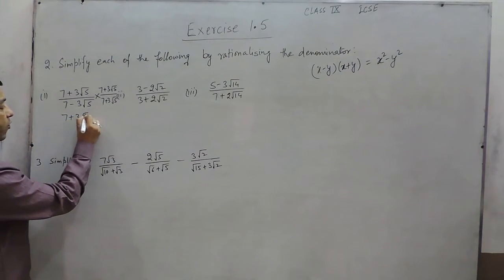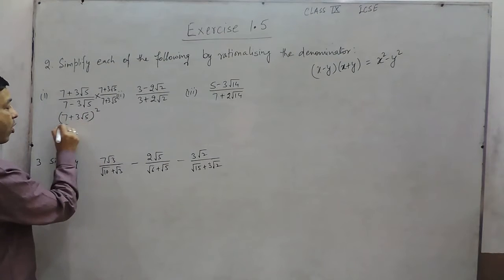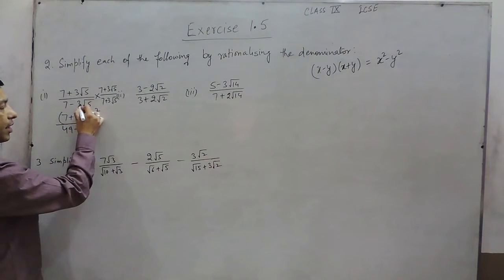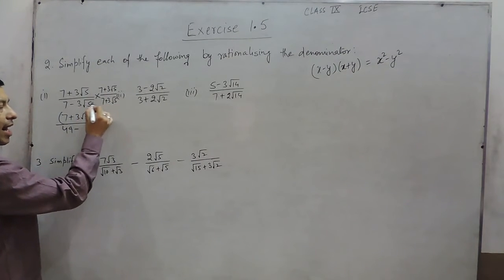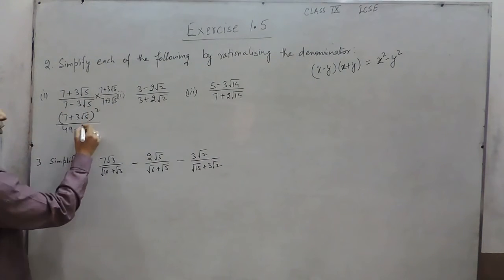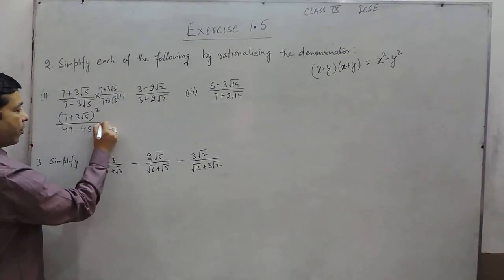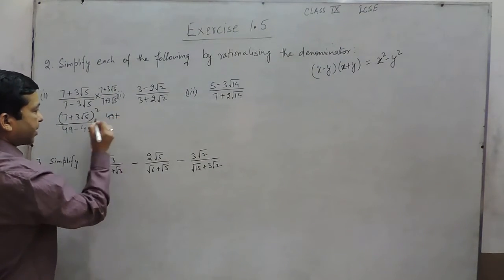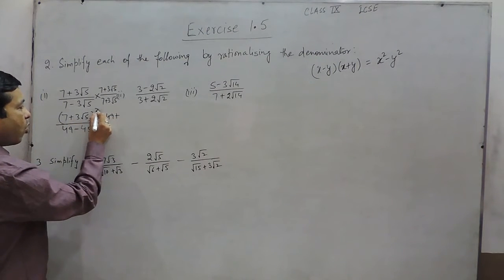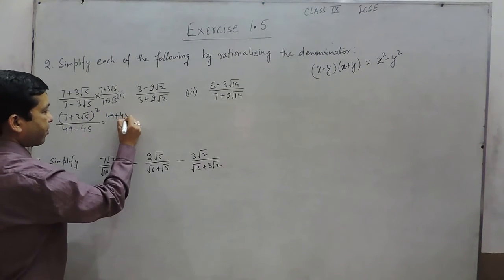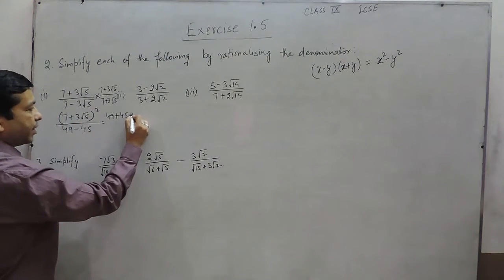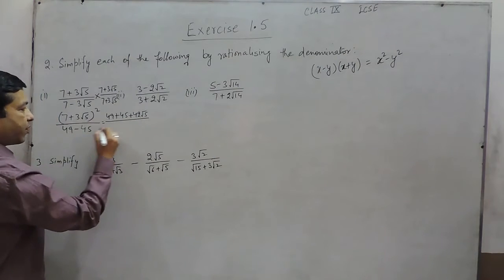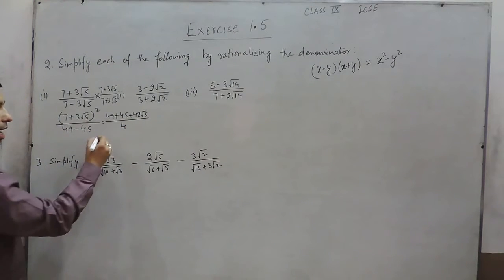It becomes (7 plus 3 root 5) whole square upon: 7 into 7 is 49, minus 3 into 3 is 9, and root 5 whole square is 5, so 9 into 5 is 45. Solving the numerator: (7 plus 3 root 5) squared is 49 plus 45 plus 2 times 7 times 3 root 5, which is 42 root 5. The denominator is 49 minus 45, which equals 4.